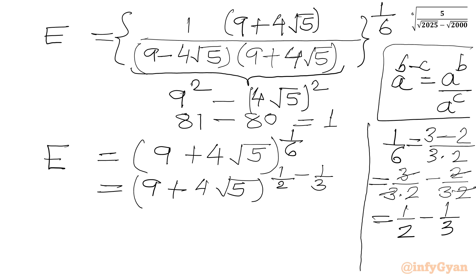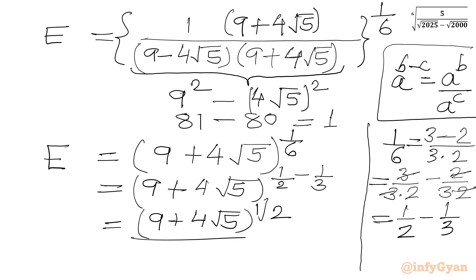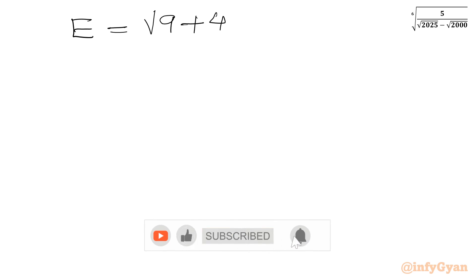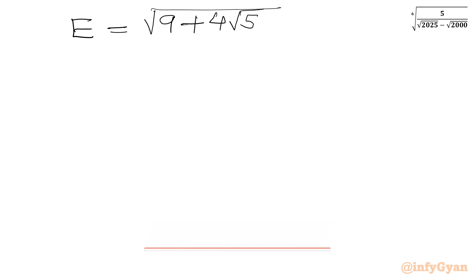We can write E as square root of 9 plus 4 root 5 over cube root of 9 plus 4 root 5. Let us call the numerator a and the denominator b, and we will evaluate each separately.